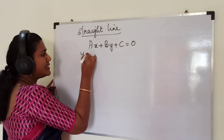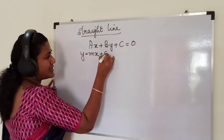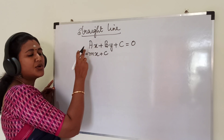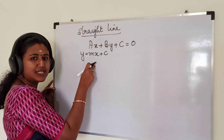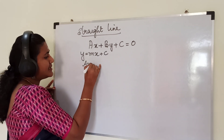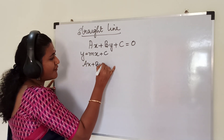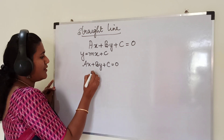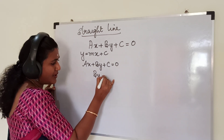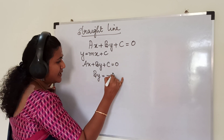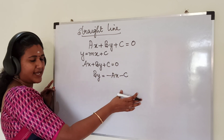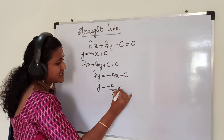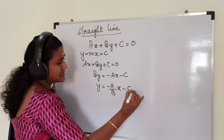You all know the slope-intercept form is Y is equal to MX plus C. Now we are going to reduce the general form into this. We will consider the general equation of a straight line: AX plus BY plus C equal to 0. We will take only the Y term alone on the left side and transpose the other two terms to the right side. So Y is equal to minus A by B times X minus C by B.